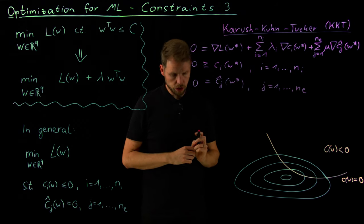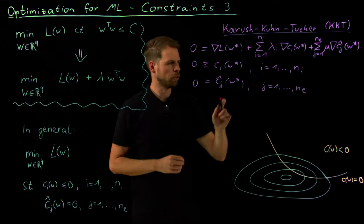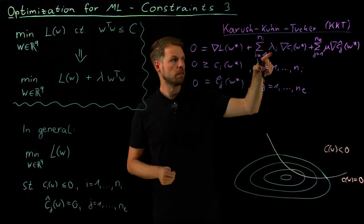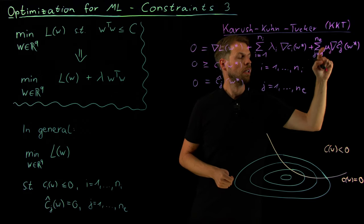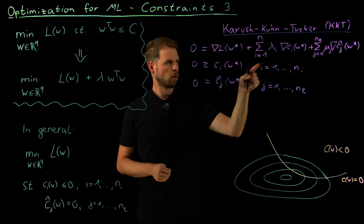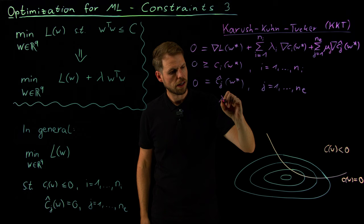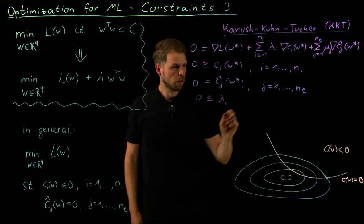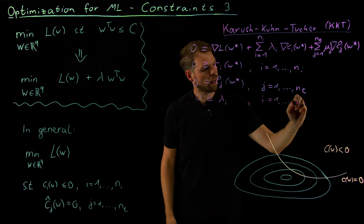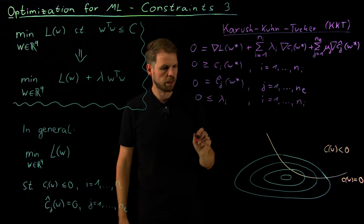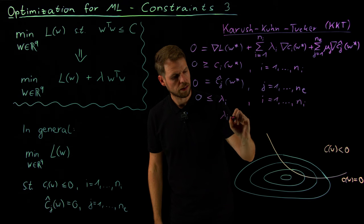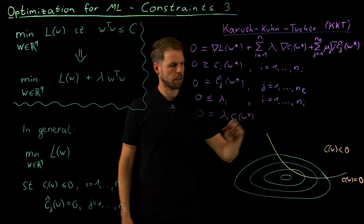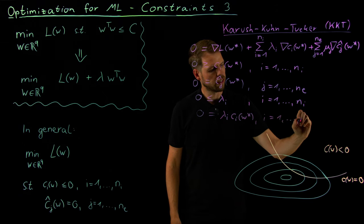And now follow a few additional conditions. So one is on the inequality constraints. And I'm going to comment on this in a second. So what we in addition have is that these lambda_i's, so the KKT multipliers, so the coefficients in front of the inequality constraints and in front of the equality constraints, that there are additional conditions, but only for the inequalities. So these lambda_i's have to be positive. Lambda_i is greater than zero for all i's from 1 to n_i. And last but not least, we have what's called the complementarity condition. So the product of lambda_i and c_i of w star has to be zero for all of these, again, i from 1 to n_i.